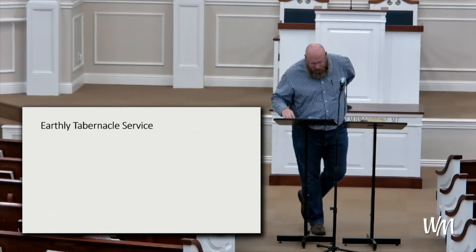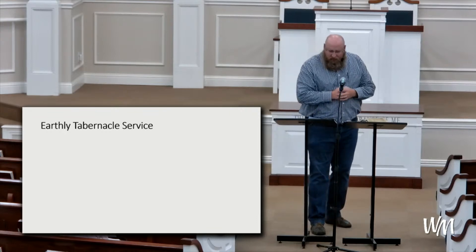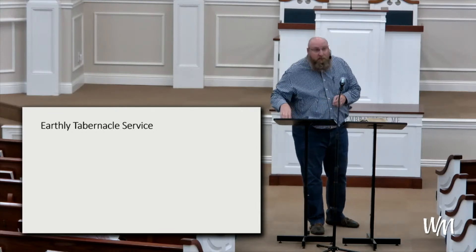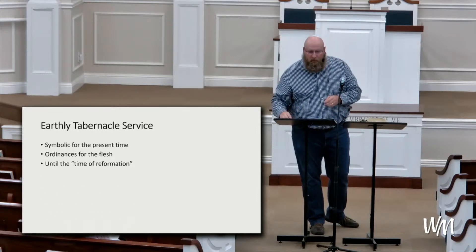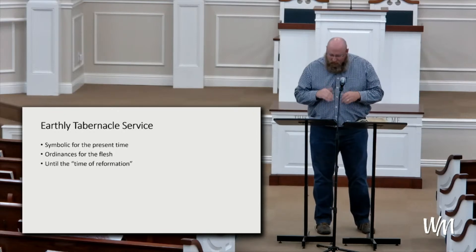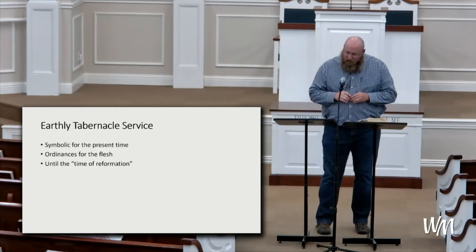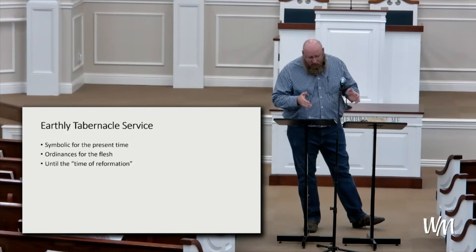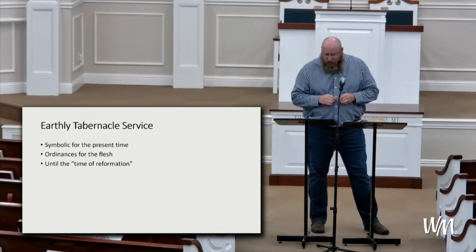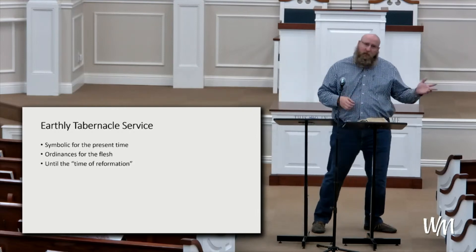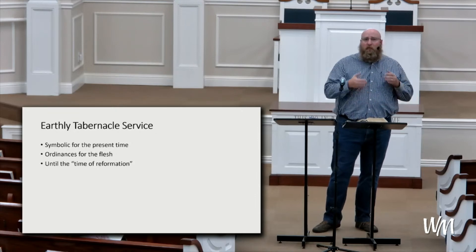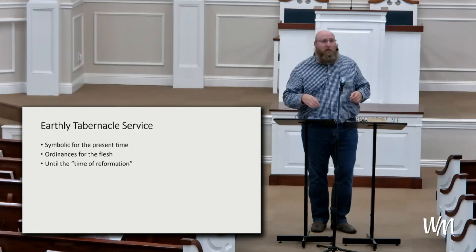Question 4: how does the writer describe the purpose and duration of the earthly tabernacle service, and why is this important? In verses 9 and 10, the earthly tabernacle is described as symbolic for the present time — it provided ordinances related to the flesh until the time of the Reformation. The time of Reformation refers to Jesus and his appearance on earth as man's savior. Jesus' sacrifice of himself rendered the sacrifices offered under the old law as obsolete and unnecessary. The worship and sacrifices going on at the tabernacle were no longer necessary under the new covenant.